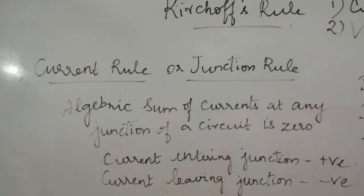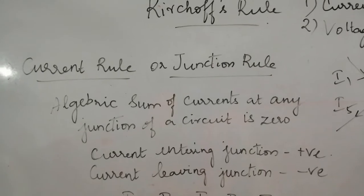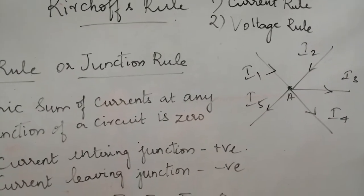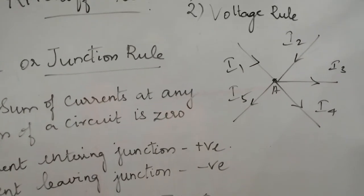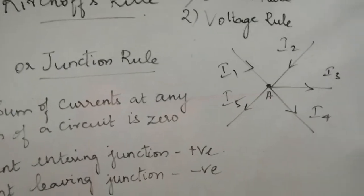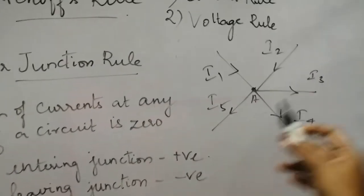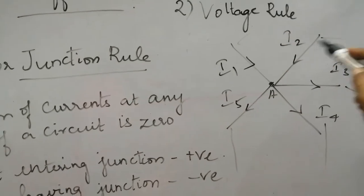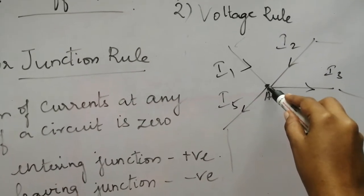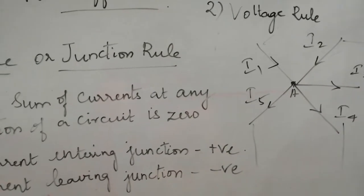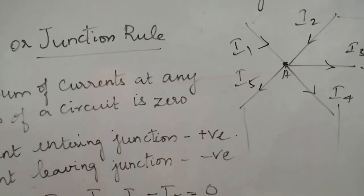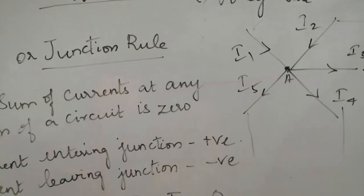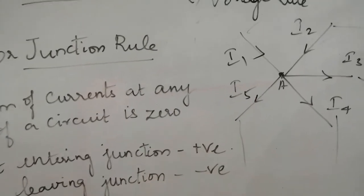This is Kirchhoff's current rule, also called the junction rule. For this rule, consider a diagram where n number of components have been connected in some way and all these circuits meet at a single junction point. The current will be flowing through that junction point, which is why this current rule is also called the junction rule.